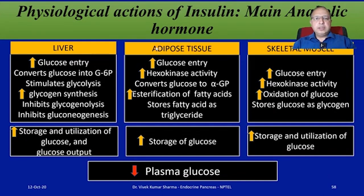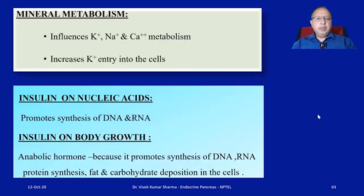In the liver, the major metabolic actions of insulin are: decreased ketogenesis, increased protein synthesis, increased lipid synthesis, decreased gluconeogenesis, enhanced glycogen synthesis, and increased glycolysis. In adipose tissue: increased glucose entry, increased fatty acid synthesis, increased glycerol phosphate synthesis, triglyceride deposition, activation of lipoprotein lipase, and inhibition of hormone-sensitive lipase. These physiological actions on liver, adipose tissue, and skeletal muscle together decrease plasma glucose level, increase storage and utilization of glucose, increase protein synthesis, promote DNA and RNA synthesis, and support cell differentiation and multiplication.